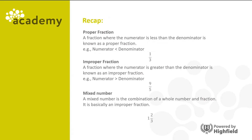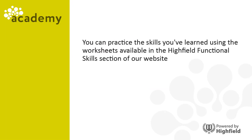Now let's recap. A fraction where the numerator is less than the denominator is a proper fraction — for example, one third. A fraction where the numerator is greater than the denominator is an improper fraction — for example, nine fifths. A mixed number is a combination of a whole number and a fraction, and is basically an improper fraction written in a different way — so one and two thirds becomes five thirds. Thanks for participating, and we'll see you next time.